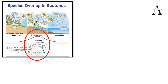This increase in species and population density happens because of favorable conditions and migration of communities from both the land zone and the aquatic zone. This is called edge effect — because of the shared edges or boundaries between land zone and aquatic zone, an effect is created where the number of species and population density increase. The organisms found primarily or most abundantly in this zone are known as edge species.